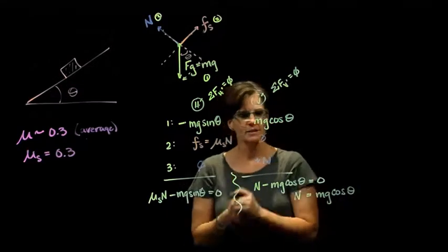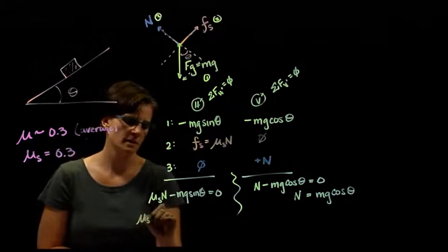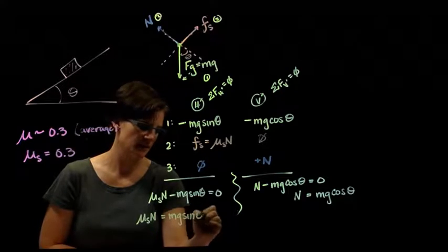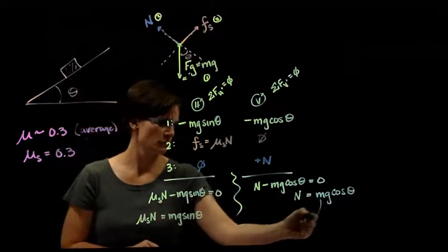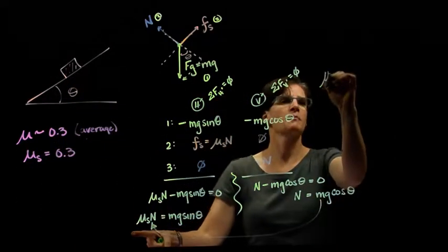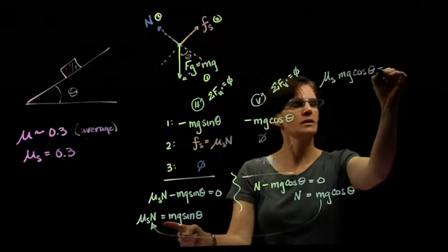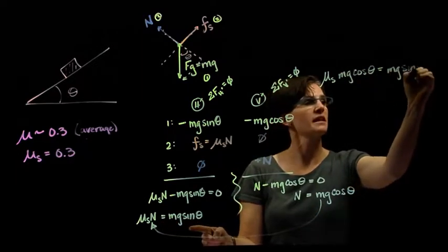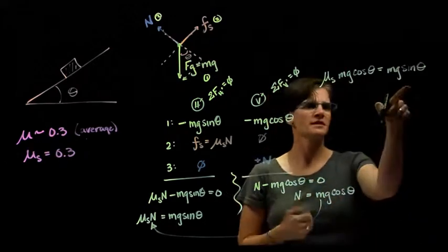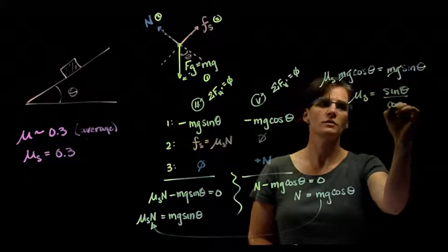Alright. Again, we're going after that angle theta. So, μ times N, bring my theta to this side, equals mg times the sine of theta. I'm going to take my normal force and I'm going to plug it in for N. It's the same normal force. So, I end up with μ_s times N equals mg cosine of theta is equal to mg times the sine of theta. I'm solving for theta. Don't forget, you're solving for theta. Well, I have mg. Divide both sides by mg. That goes away.